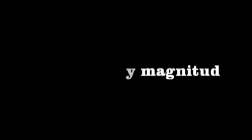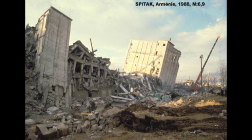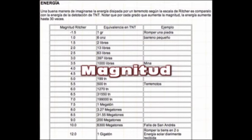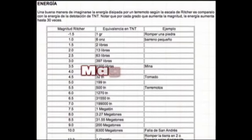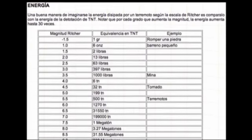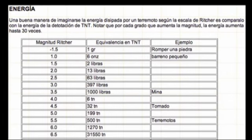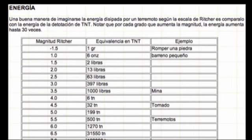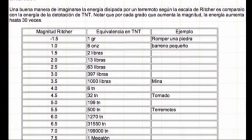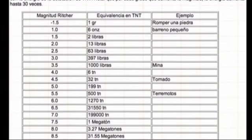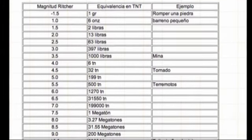Intensidad y magnitud de los terremotos. Para poder describir la fuerza de un terremoto y los daños que produce, se han confeccionado escalas que miden la magnitud y la intensidad de los seísmos. La magnitud es una medida objetiva de la energía de un seísmo, que medimos a través de la escala de Richter, basándose en los datos de un sismógrafo. Es una escala que crece de forma exponencial, por lo que el paso de una unidad a la siguiente supone multiplicar la energía por 10.